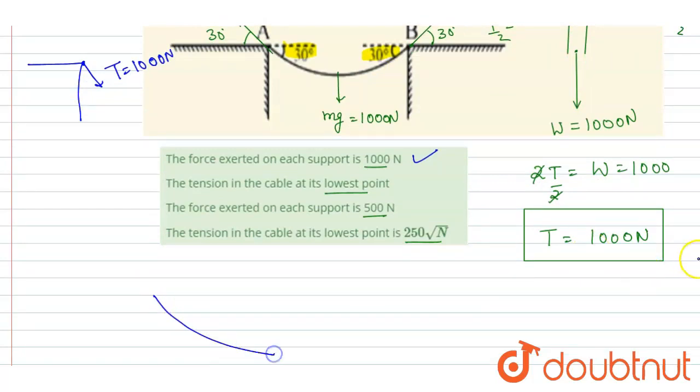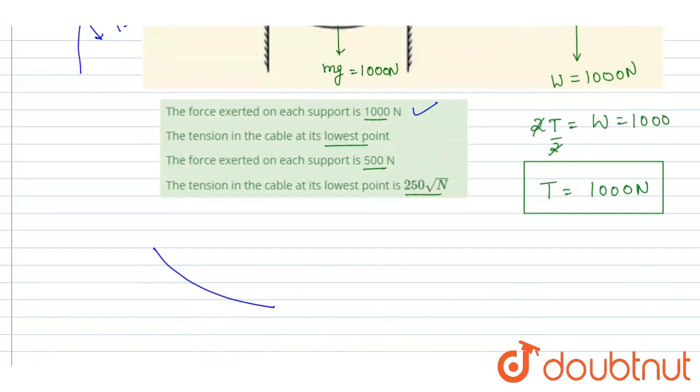In half. Here the tension force will be in this direction, and here the tension force was in this direction, and this angle was 30 degrees. Let's see, here the tension is T₀.